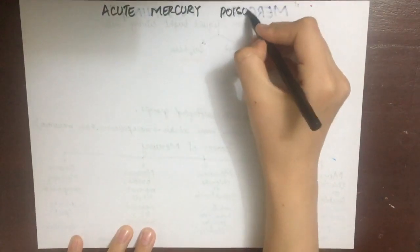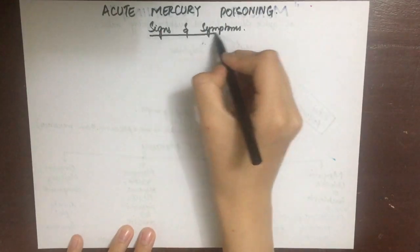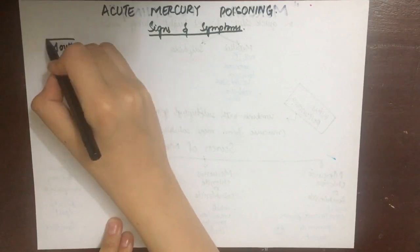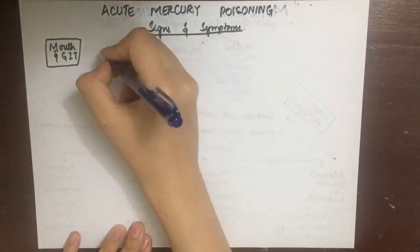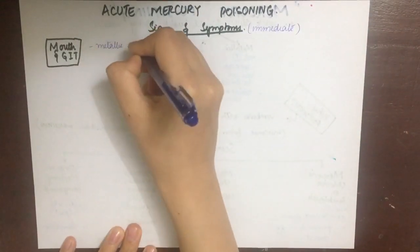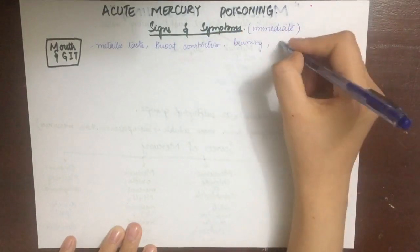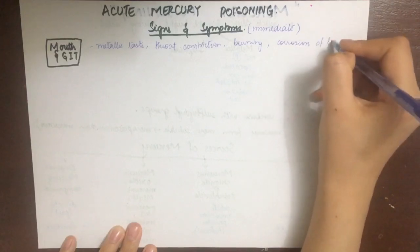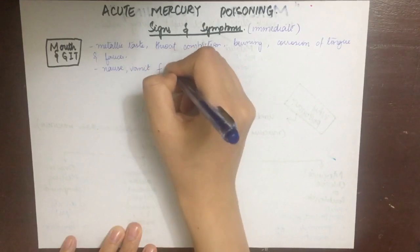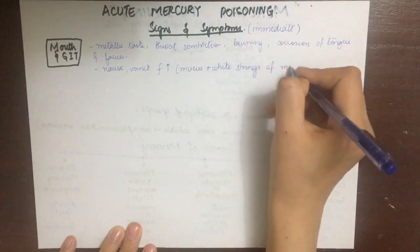In acute mercury poisoning, signs and symptoms can be divided into those related to the mouth and GIT, and systemic ones. The mouth and GIT symptoms are very immediate in onset and include metallic taste in the mouth, throat constriction, burning sensation from the mouth to the stomach, and corrosion of the tongue and fauces, which are the openings to the oropharynx.